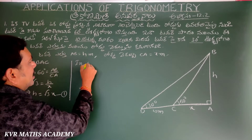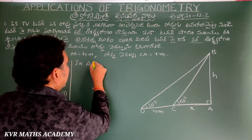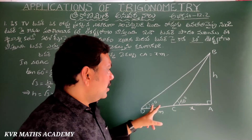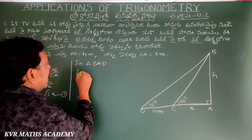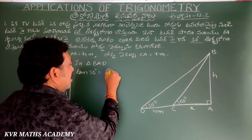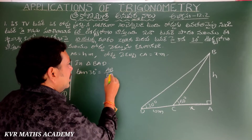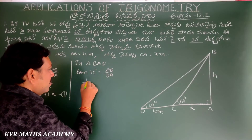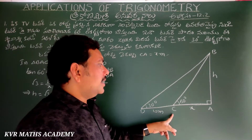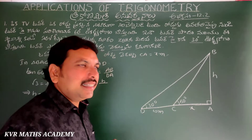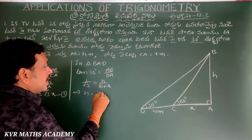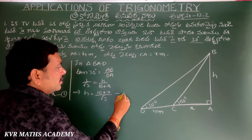Next, in triangle BAD, the angle is 30 degrees. Tan 30 degrees equals AB by AD. So 1 by root 3 equals h by (DA), and DA equals DC plus CA, which is 10 plus x. So tan 30 gives us h equals (10 plus x) by root 3.